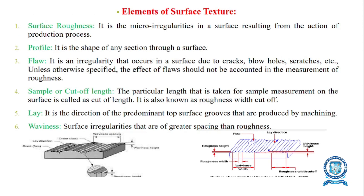The elements of surface texture include: surface roughness — micro irregularities in a surface resulting from the production process; profile — the shape of any section through a surface; flaw — cracks, blow holes, or scratches on the surface of the material; and sample or cutoff length — the particular length taken for sample measurement on the surface, also known as roughness width cutoff.